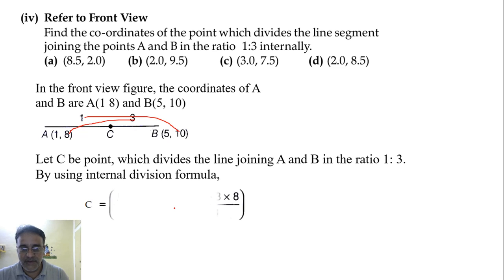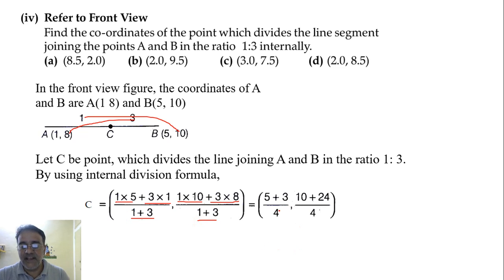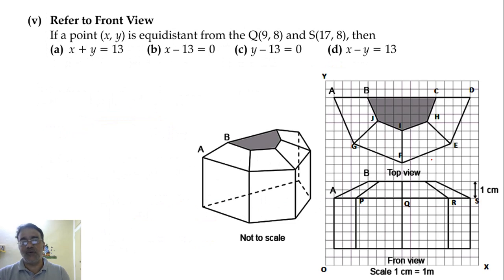So we'll get (5 + 3)/4 and this we will get (10 + 24)/4. So 8/4 will be 2 and 34/4 will give 8.5. So the final answer is (2, 8.5). So in this, option D is correct, the last one. So now we'll move toward the fifth question.